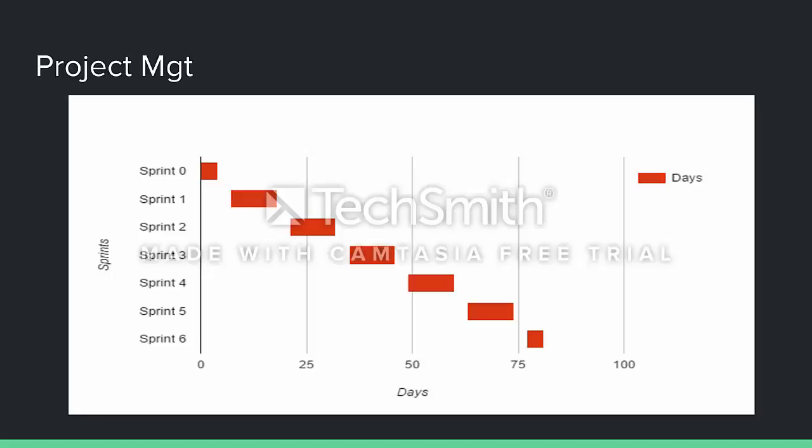Here we present our Gantt chart. Basically, it shows the week-by-week progression per sprint. Everything was performed on time, some things were performed ahead of schedule, and we were able to complete just about everything we set out to.